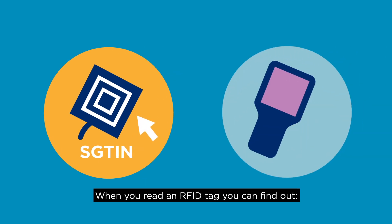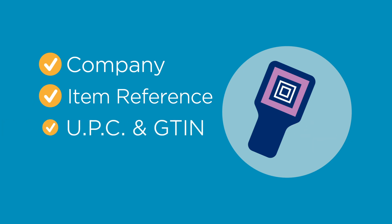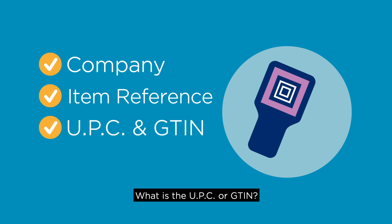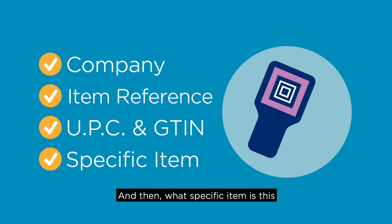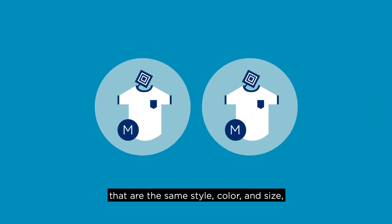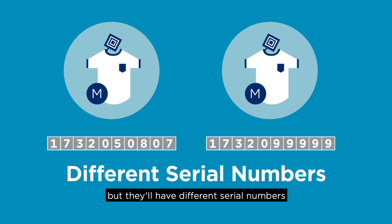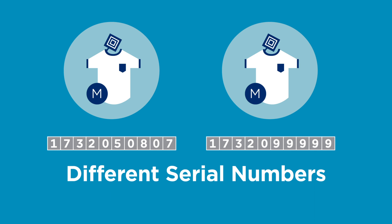So when you read an RFID tag, you can find out what company produced the item, what is the item code, what is the UPC or GTIN, and then what specific item this is through use of the unique serial number. So if you have two shirts that are the same style, color, and size, they'll have the same UPC or GTIN because they're the same product, but they'll have different serial numbers to distinguish the two items.